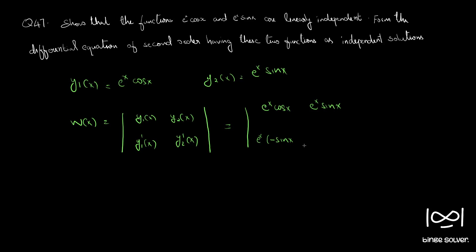Since we took e^x outside, we can write cos(x). Similarly, the derivative of e^x·sin(x) is e^x·(cos(x) + sin(x)). We applied the product rule. So this is the determinant, and now we can open it.